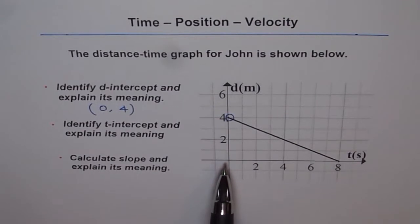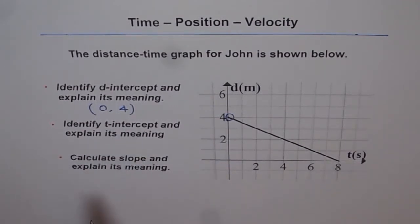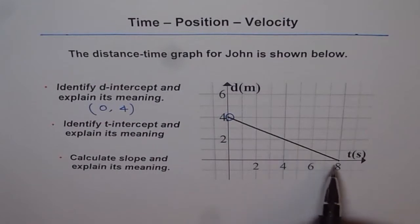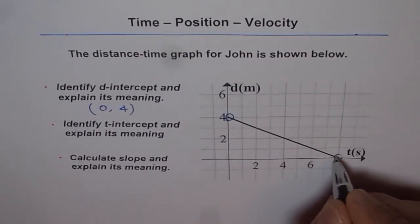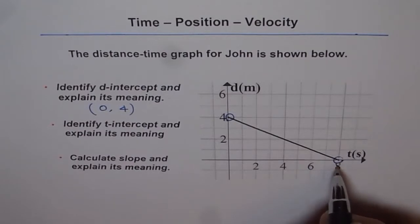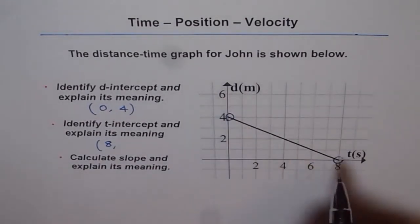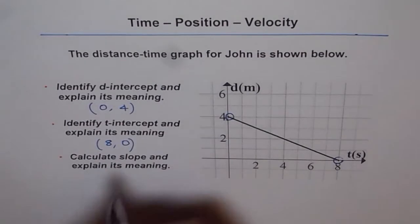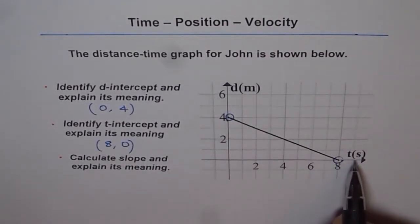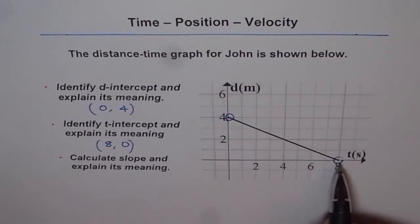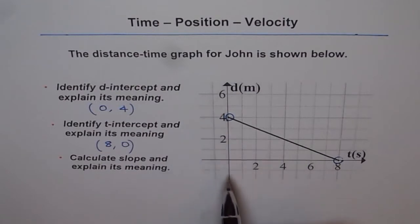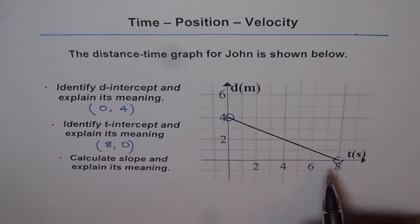Now let's understand what t-intercept is. Our horizontal axis is called time t in seconds, so the graph crossing the horizontal axis will be called the t-intercept. This point is the t-intercept, and we can give its coordinates as t equals 8 seconds and distance d equals 0. The significance of t-intercept is that at this point distance is 0 — the vertical value is 0 — so that is the final position for the distance-time graph shown here.